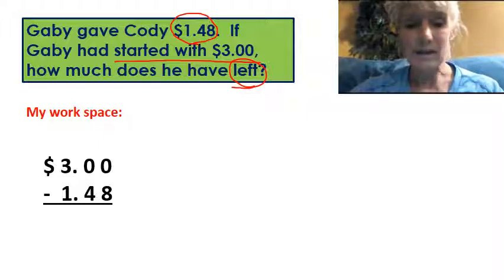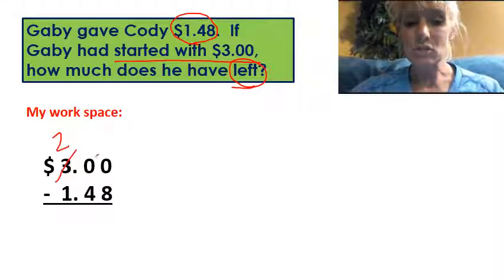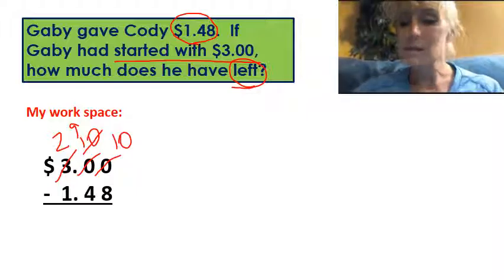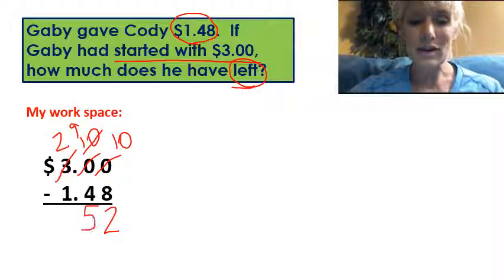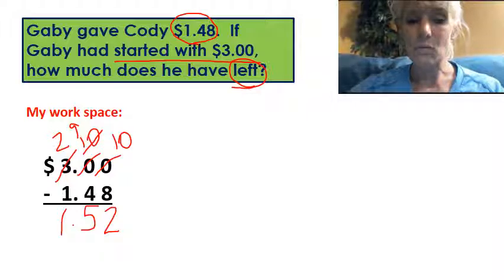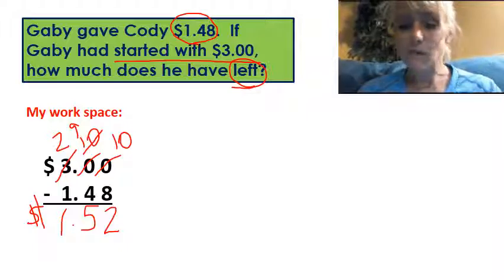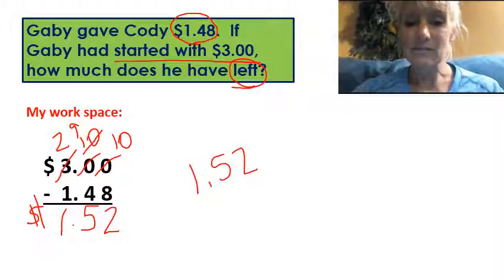So we're going to simply subtract. I go over to my three — it becomes a two. My zero becomes a ten. My ten becomes a nine. This zero becomes a ten. Ten take away eight is two. Nine take away four is five. Drop down my decimal point. Two take away one is one. Drop down my dollar sign. And now I know that Gabby is going to have one dollar and fifty-two cents left after he gave some to Cody.